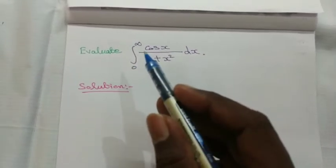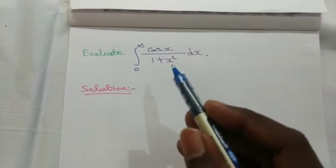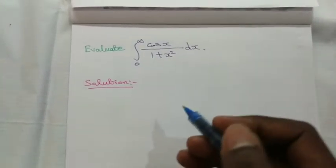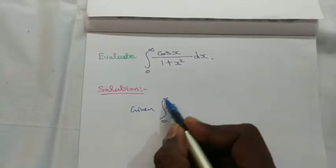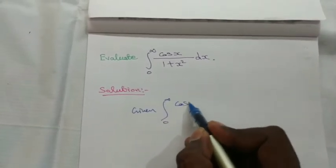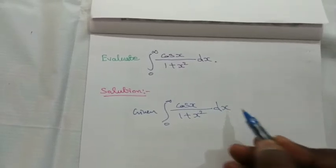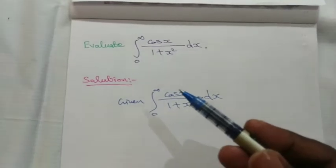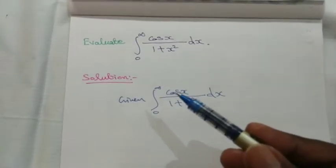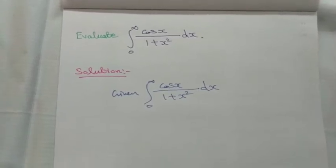Evaluate the integral from 0 to infinity of cos x divided by (1 plus x squared) dx. The given integral has limits 0 to infinity and the integrand contains a trigonometric term, therefore this is a contour integral of type 3.